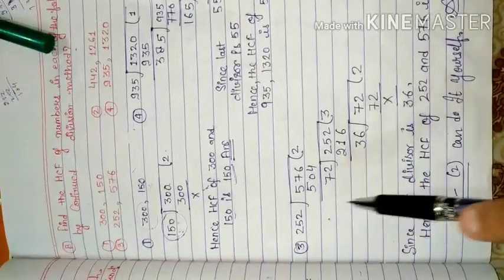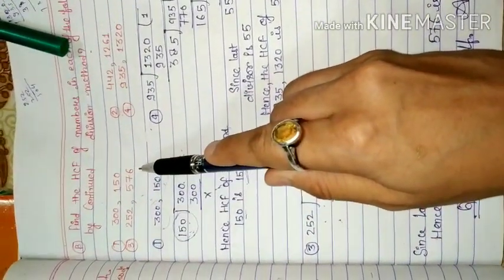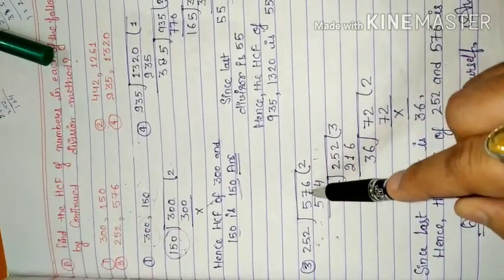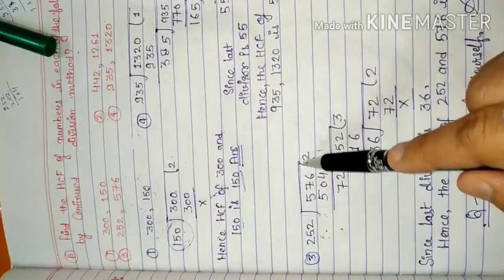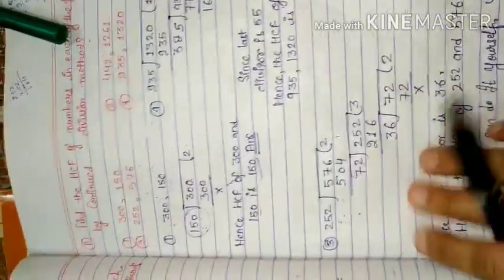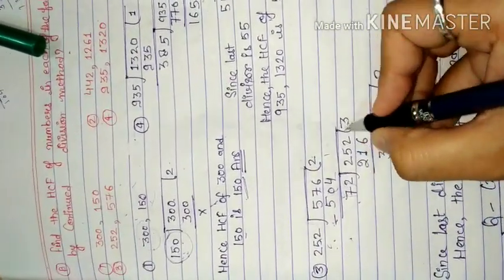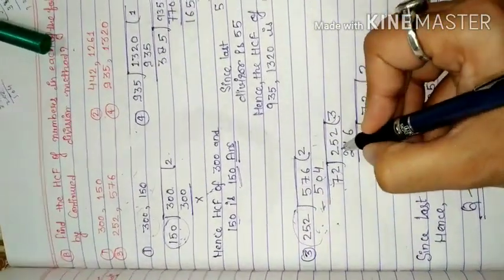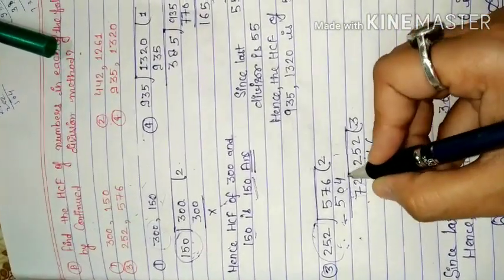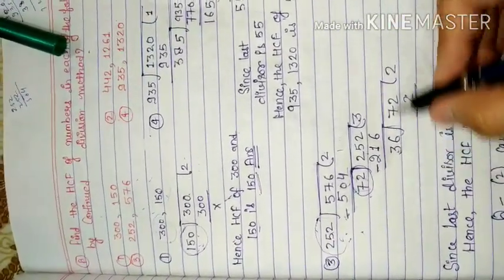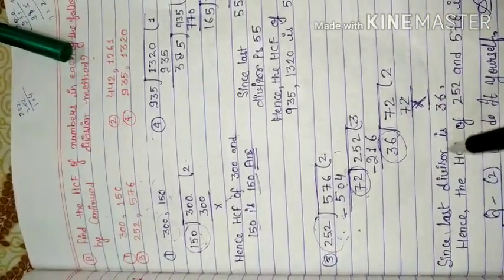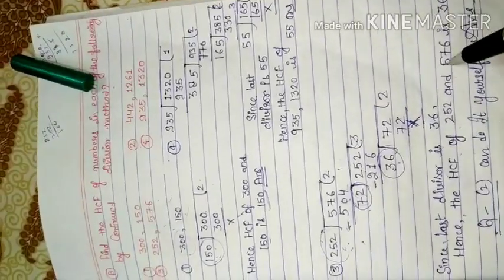Question number 3: 252 and 576. I have told you about placing the smaller digit on the left. Then we divide 252 into 576, getting 504. Then we divide 252 into 504 getting 252. We continue this process, and the last divisor is our answer.